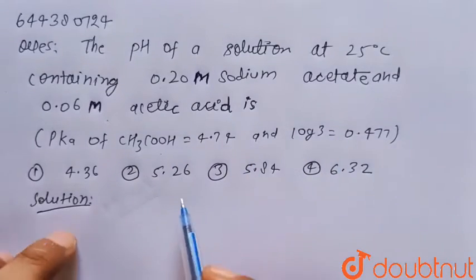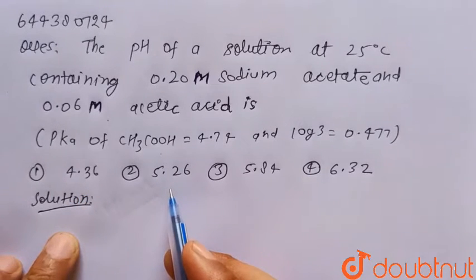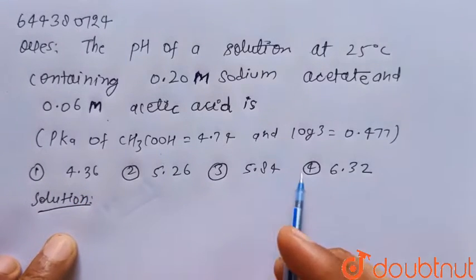Four options are given: first is 4.36, second is 5.26, third is 5.84, and fourth is 6.32.